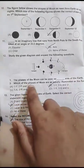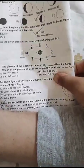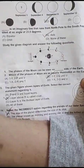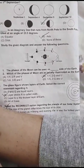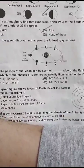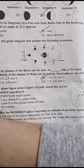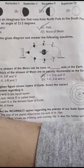Study the given diagram and answer the following question. The phases of the moon can be seen on the Y side of the Earth. Q is the phase of the moon that is equally illuminated as the Earth, and U also illuminates. So the correct option is option B: 1Y, 2, Q and U.